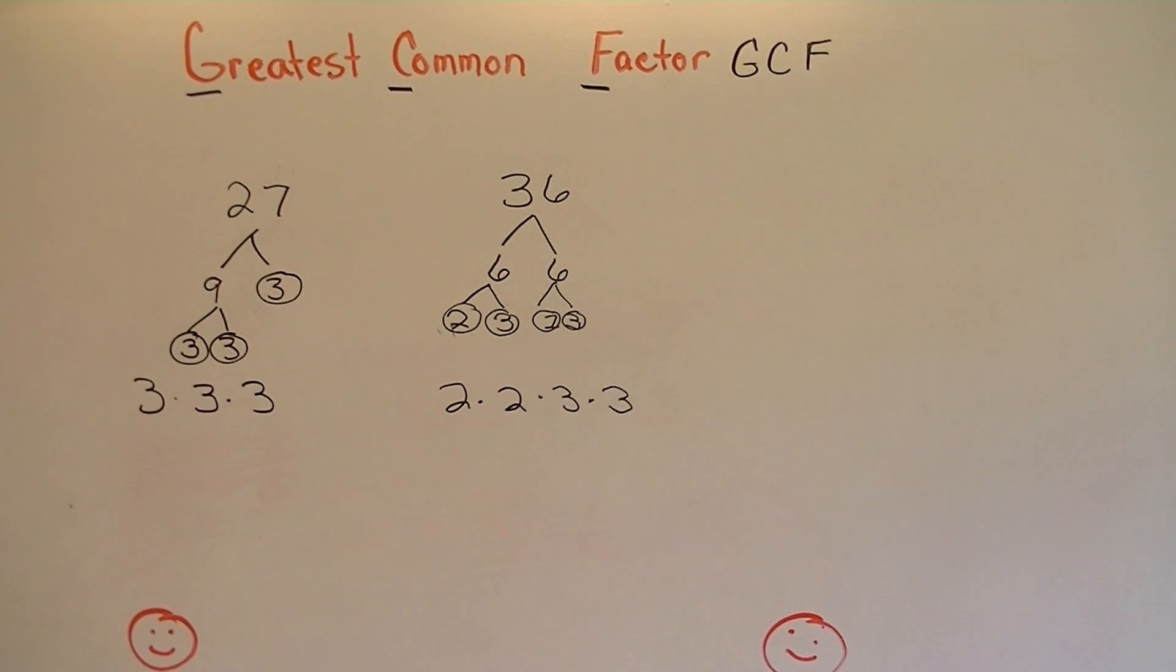Now, let's look and see what they have in common. Well, 27 has a 3, and so does 36. So we'll write that down here. And then 27 has another 3, and so does 36. And that's it. So if we multiply these two numbers, we get 9.